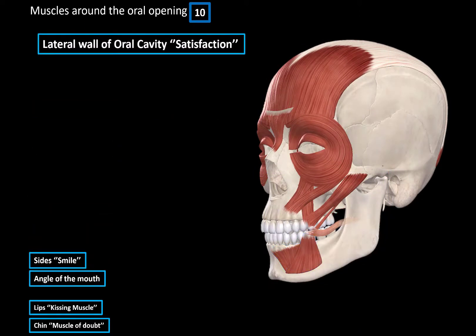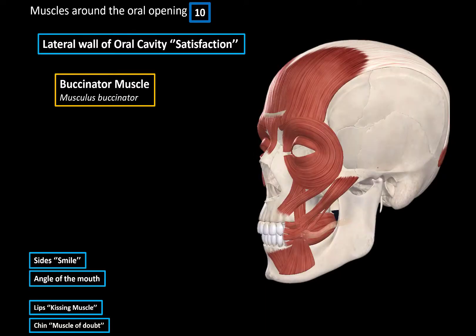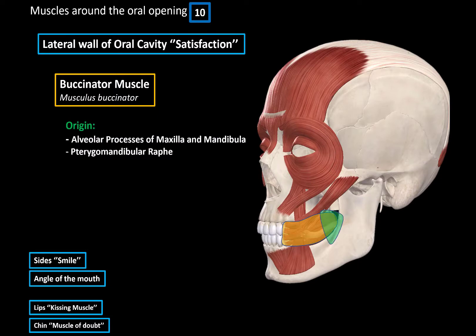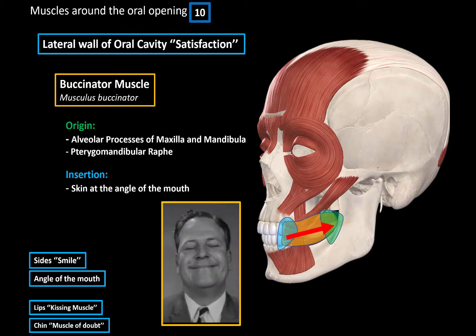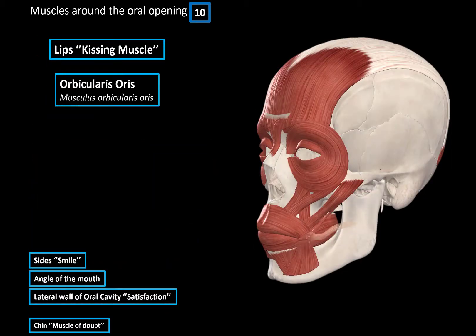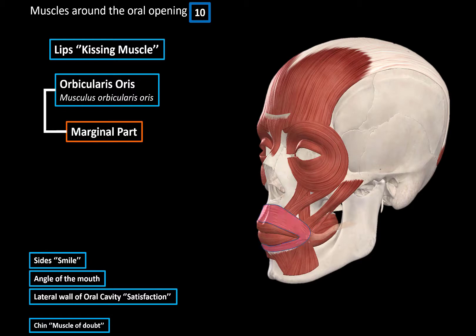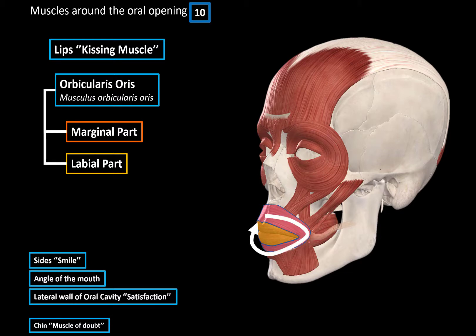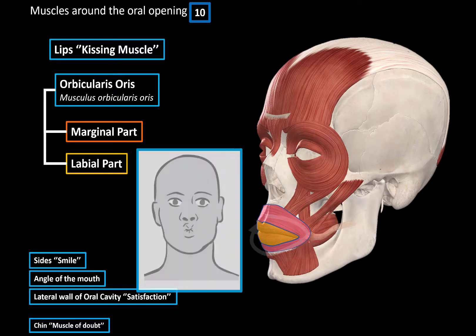Next we have a muscle on the lateral wall of the oral cavity called the buccinator muscle. It originates from the alveolar processes of the maxilla and mandible as well as the pterygomandibular raphe, and inserts at the skin of the angle of the mouth. When it contracts, it pulls the angle of the mouth laterally, forming a facial expression of satisfaction. Then we have the kissing muscle around the oral opening — the orbicularis oris — consisting of a marginal part (outer fibers) and a labial part giving the shape of the lips. These fibers are arranged circularly underneath the skin and protrude the mouth, forming a kissing face.